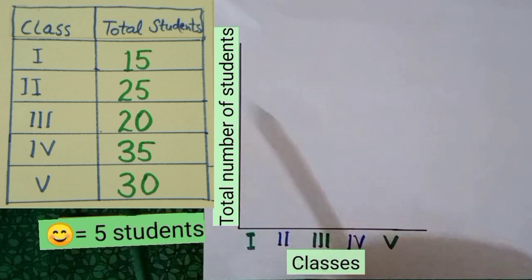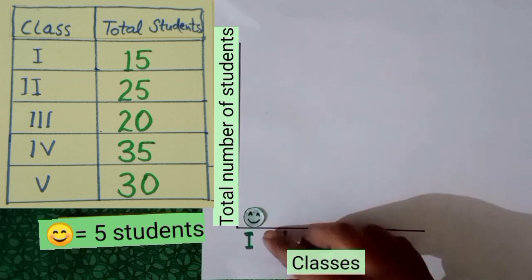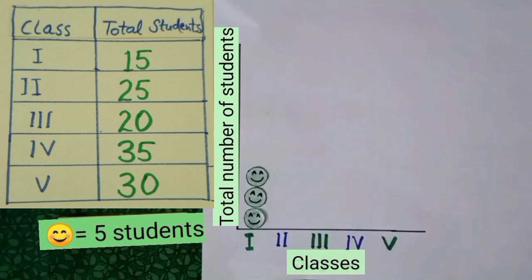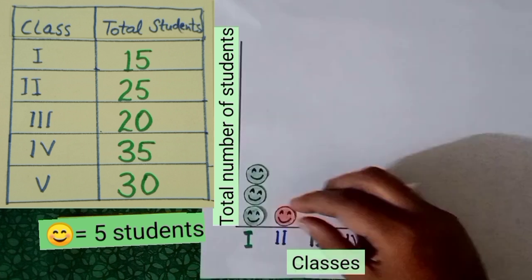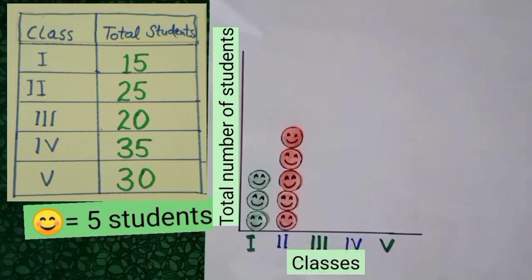In 1st class we have 15 students. Counting: 5, 10, 15. And in 2nd class we have 25 students. Counting: 5, 10, 15, 20, 25.